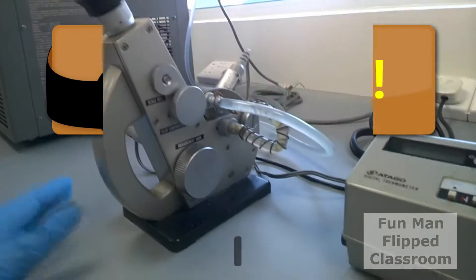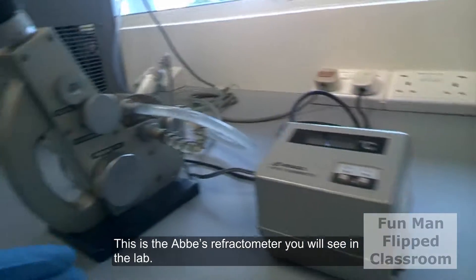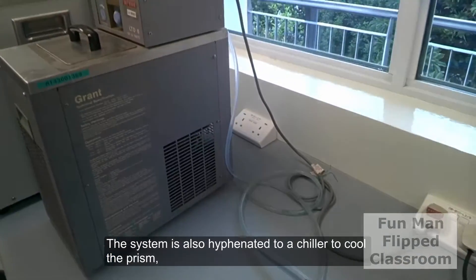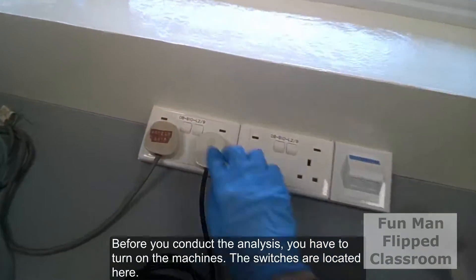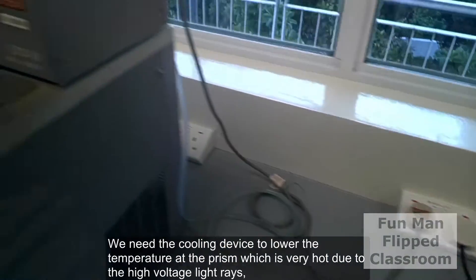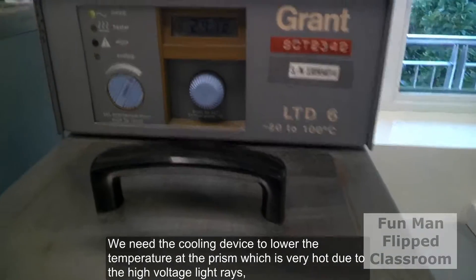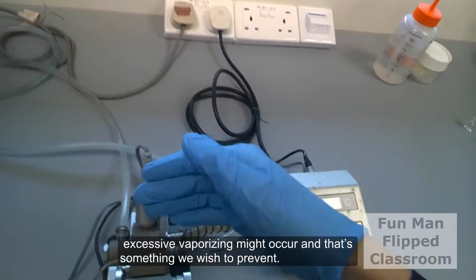This is the Abbe refractometer you will see in the lab. It is joined to a counter, that is a digital thermometer. The system is also hyphenated to a chiller to cool the prism, and before you conduct any analysis, you have to turn on the machines. We need the cooling device to lower the temperature at the prism which is very hot due to the high voltage light rays. Excessive vaporization might occur and this is something we wish to prevent.